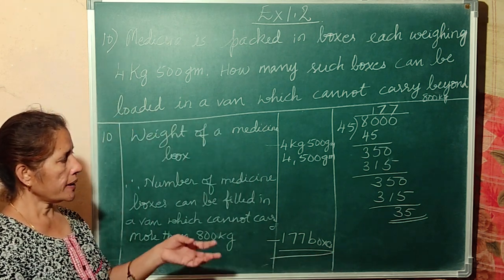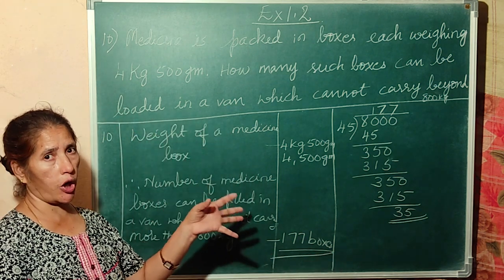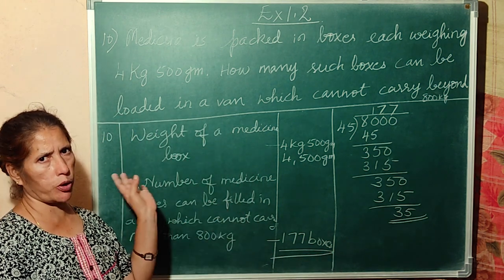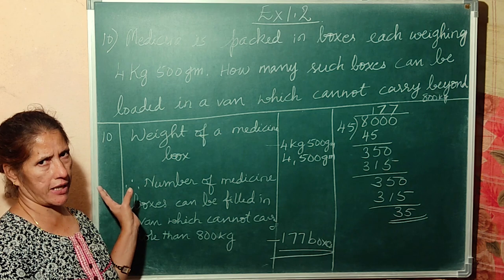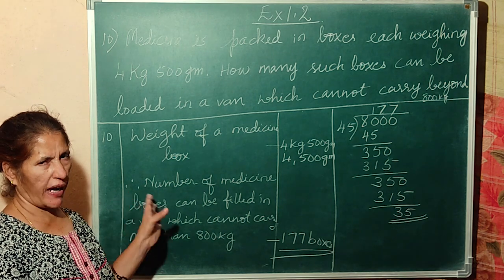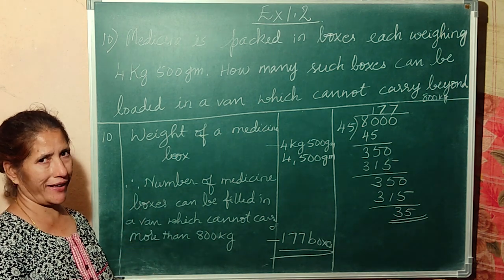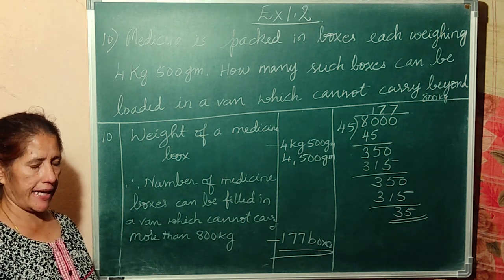So 177 boxes can be loaded so that the weight in the lorry will not be more than 800 kg.